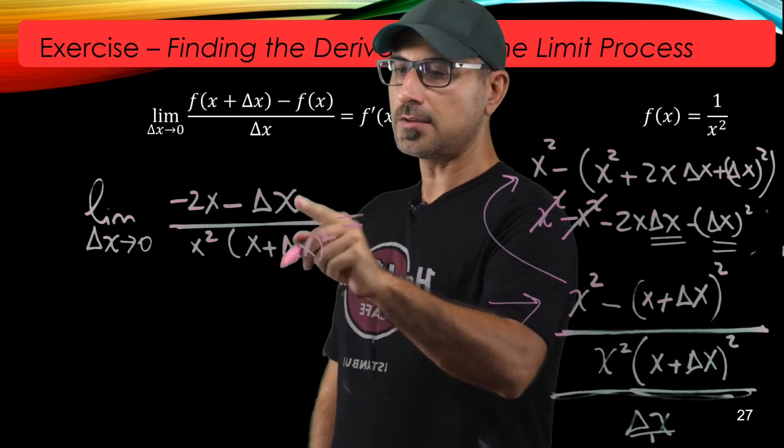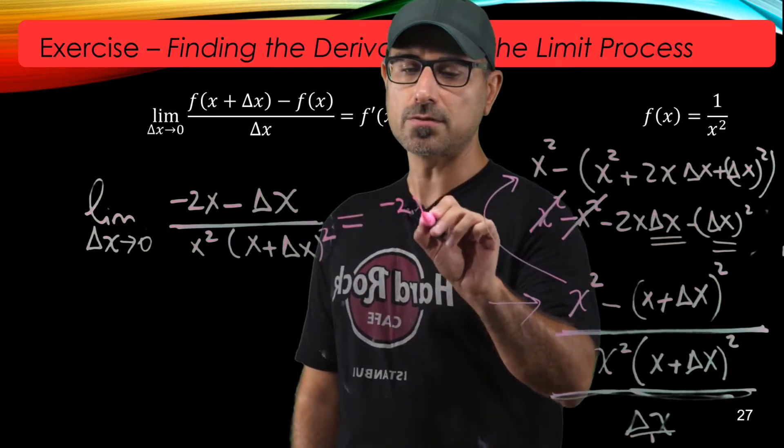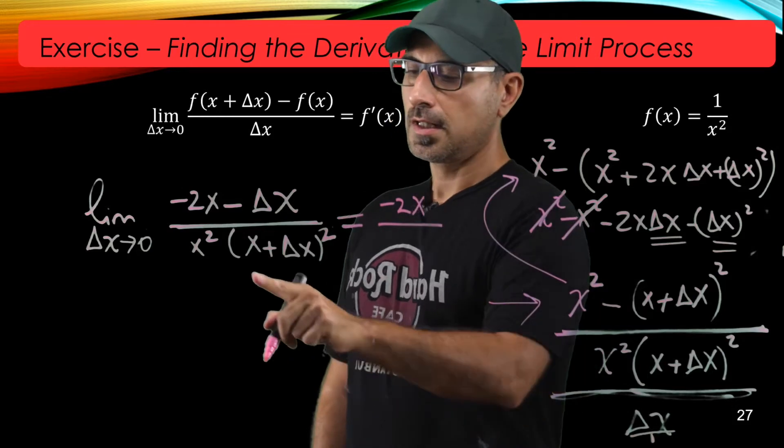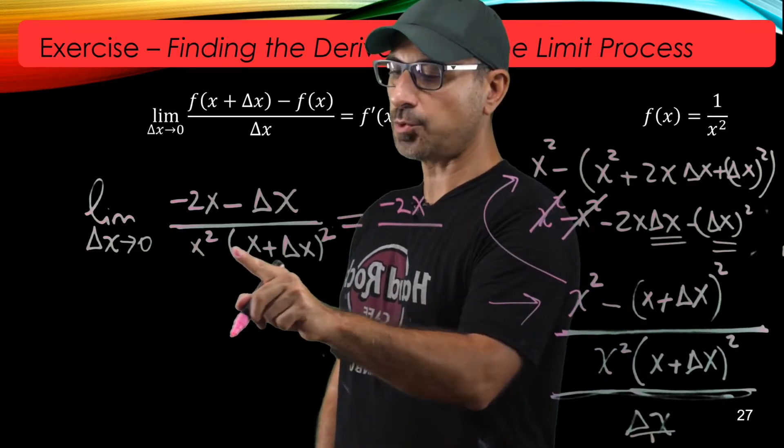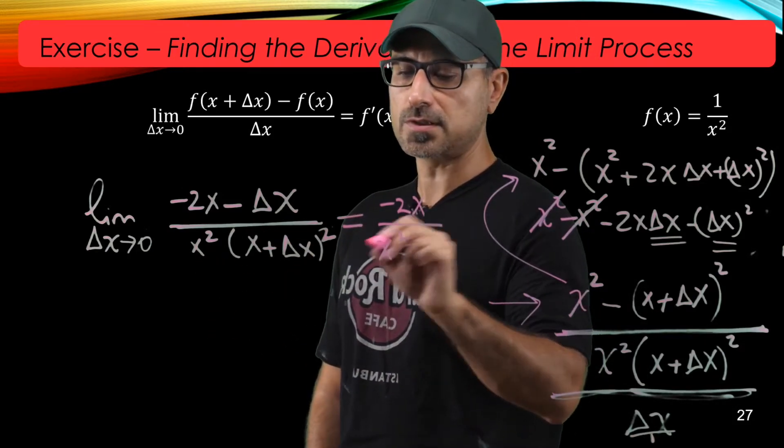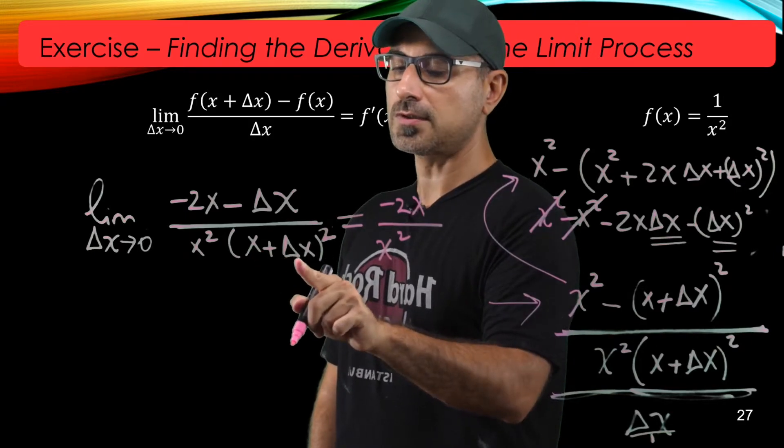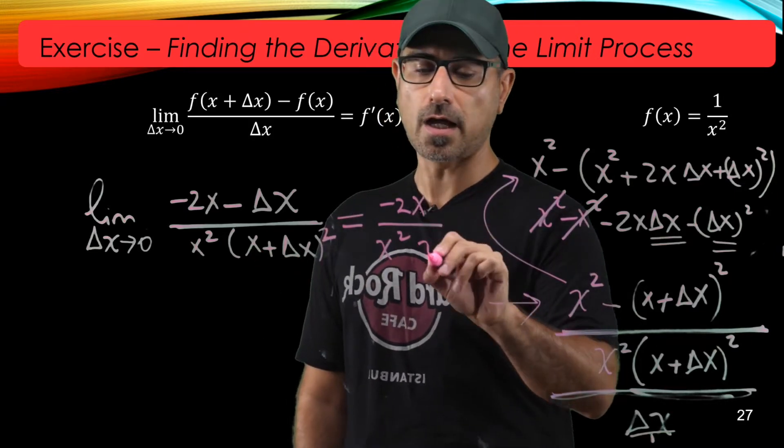Well, this delta x is 0. The top converges to negative 2x, and the bottom converges to x squared times x plus 0 squared. That's another x squared.